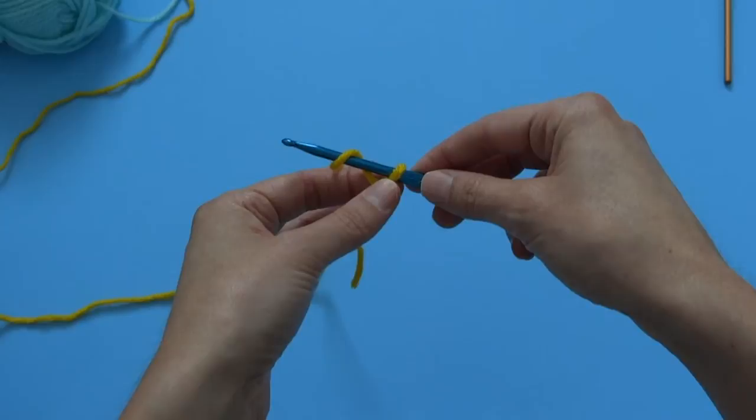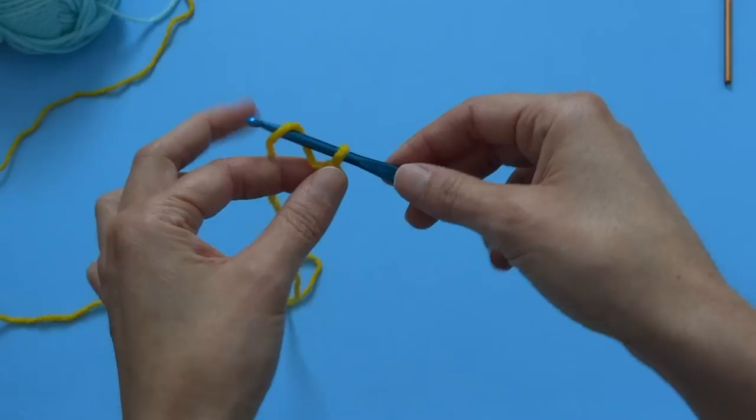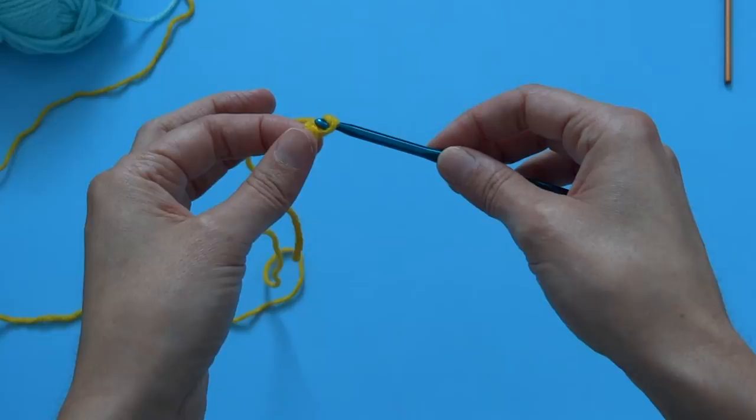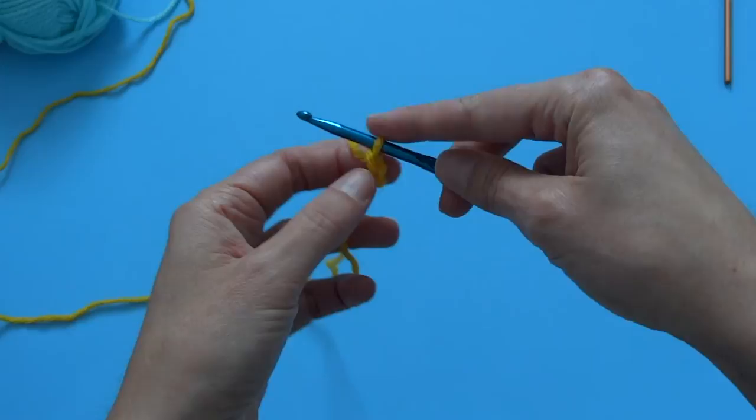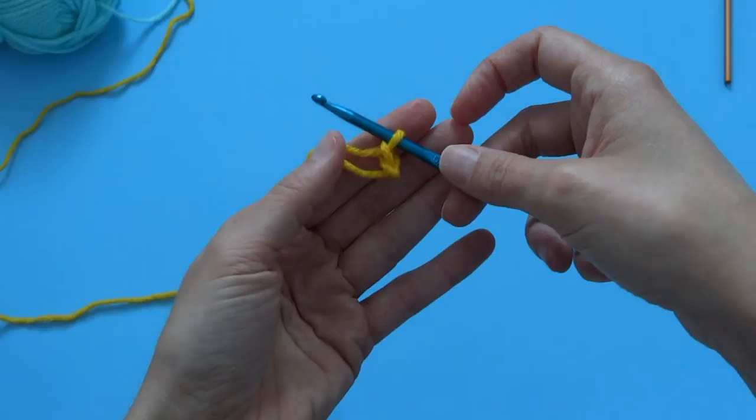It's a little difficult when you first start, so don't worry because the first few stitches are always a bit tricky. But what you want to do is wrap that string and use your hook to just pull it through the loop that's on your hook. So now we have a new loop on our hook, that's what it looks like. We're going to do that again.